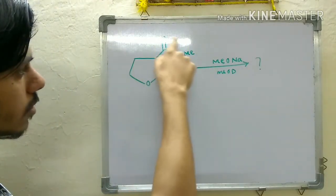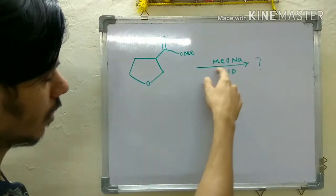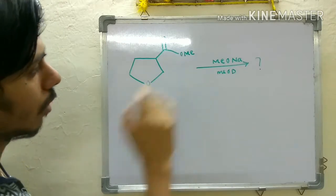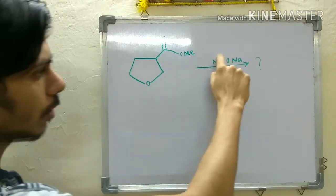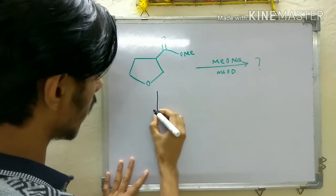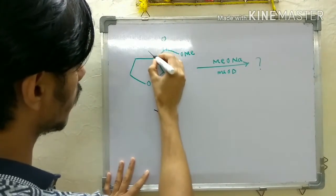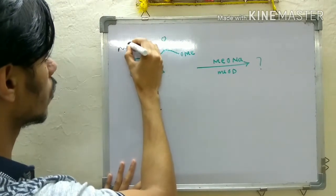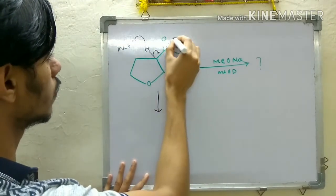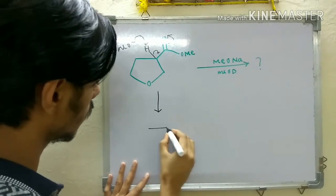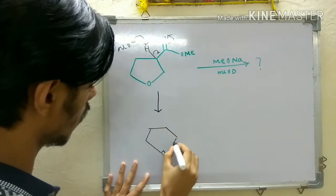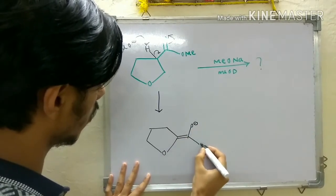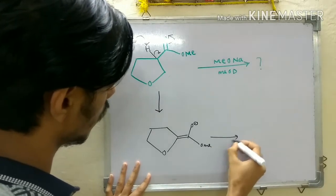What will be the product here? You are given a compound and your reactants are sodium methoxide in methanol-d. What will be the product? First of all, you are given a base, so you have to find the acidic proton. You can find that there is an acidic proton because it is adjacent to the carbonyl group, so your methoxide will take this proton to give you an enolate.